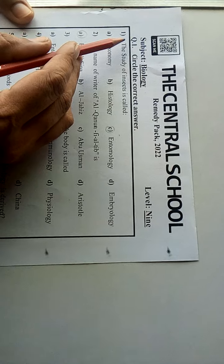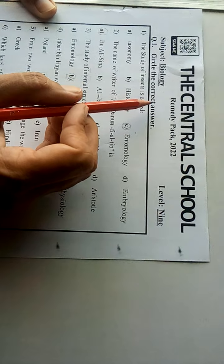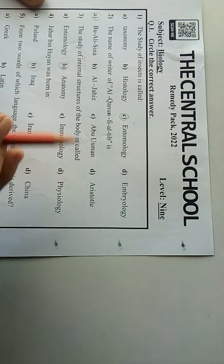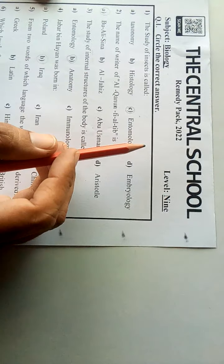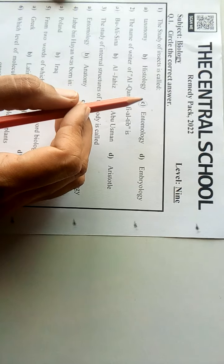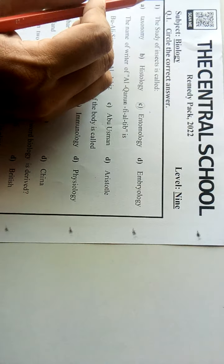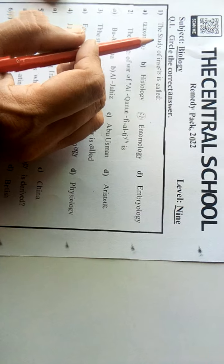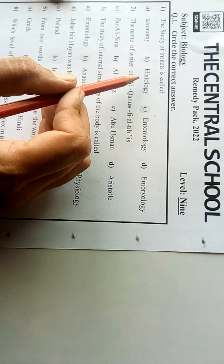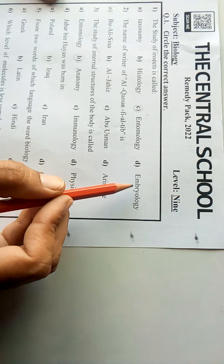Moving on to question number one, circle the correct answer. We have provided here various questions with one to four options. We have to mark the right option. Start number one: the study of insects is called taxonomy, histology, entomology, or embryology.